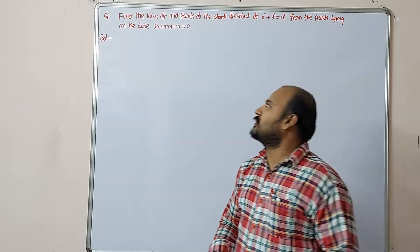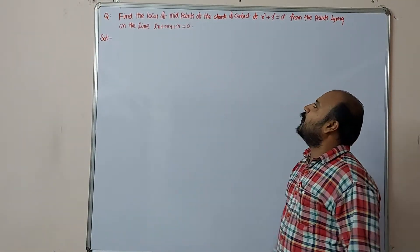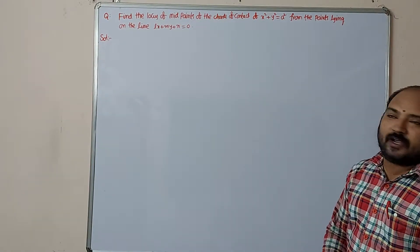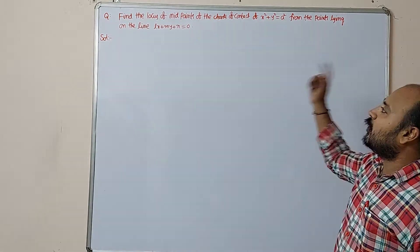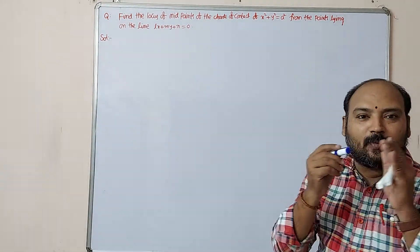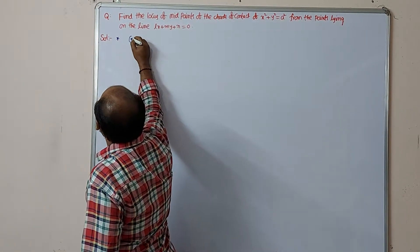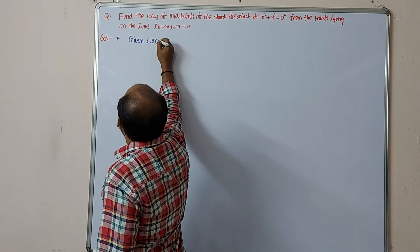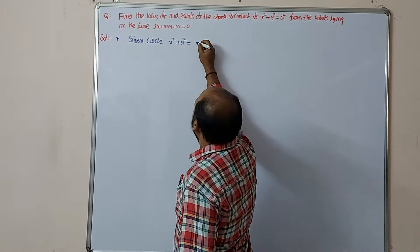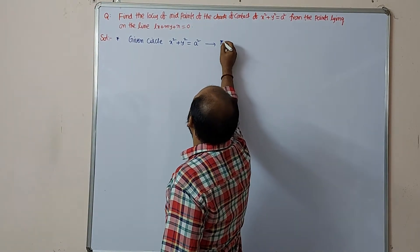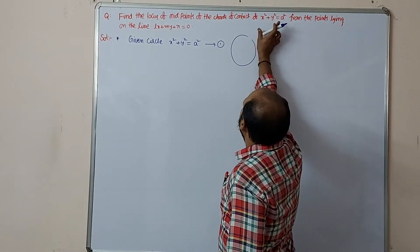Another important question for students from circle examples: find the locus of midpoints of the chords of contact of x² + y² = a² from the points lying on a given line. The given circle is x² + y² = a², call this equation number one. A rough figure may look like this.